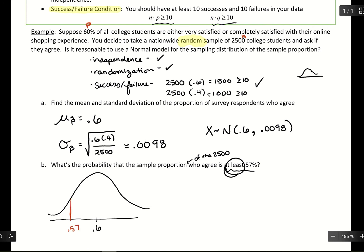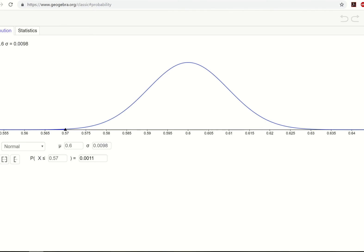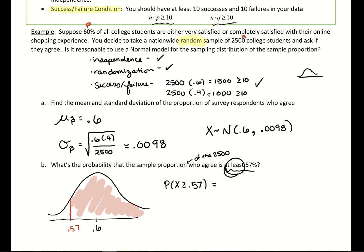So we'll still have that cutoff value of 0.57. If this had said who agree is less than 57%, then that would have been perfect. But this should be at least. So we want to go to the other side. This is going to be the probability of being more than or equal to 0.57. So we just need to switch our direction here to the right. And it's 0.9989. Got to be careful of that wording.